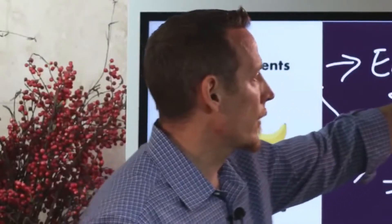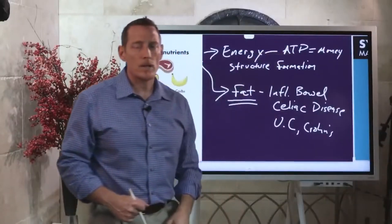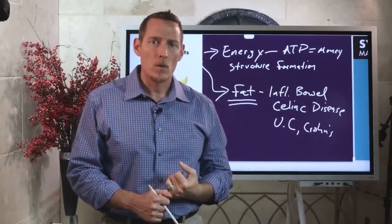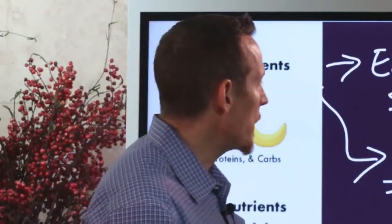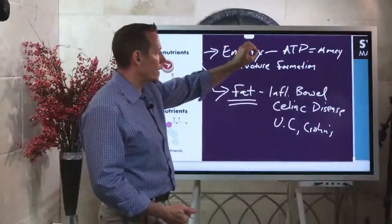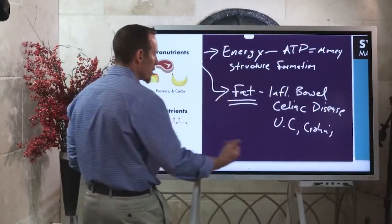In fat malabsorption, fat is a major substrate necessary to produce ATP, so we'll see a lot of fatigue in these individuals and a lot of wasting. This is why people that present with inflammatory bowel disease and chronic fat malabsorption can't put on mass or weight and have a hard time keeping their weight up, because they're malabsorbing one of the major nutrients that help you generate energy.